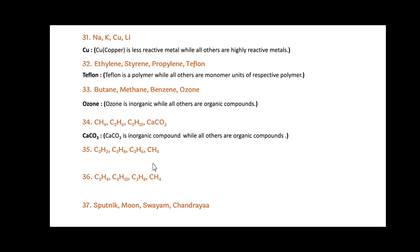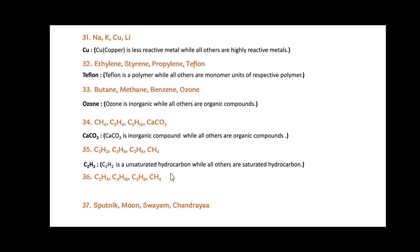Next: C2H2, C3H8, C2H6 and CH4. Here, C2H2 is the odd one out. Since C2H2 is an unsaturated hydrocarbon, while all others — C3H8, C2H6 and CH4 — are saturated hydrocarbons.